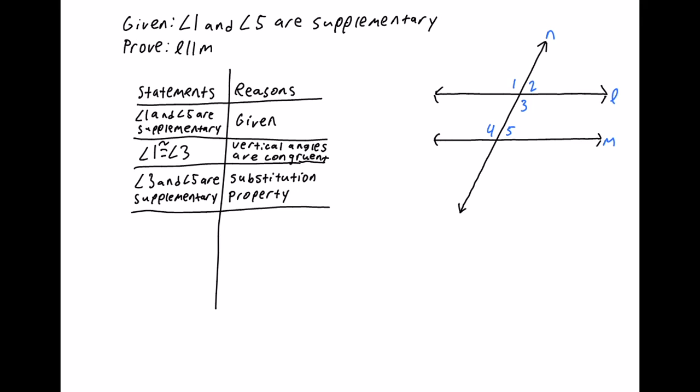From here, angle three and angle five are same side interior angles. Same side interior angles are supplementary, so since angle three and angle five are supplementary and they're same side interior angles, we can say that line L and line M are indeed parallel. So we say 'line L is parallel to line M,' and the reason is 'same side interior angles are supplementary.' We've just gone through the steps to prove that line L is parallel to line M.